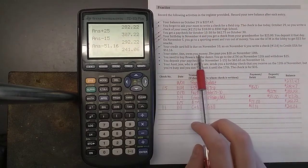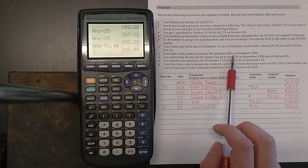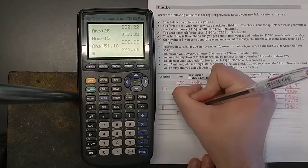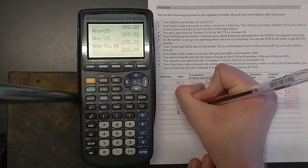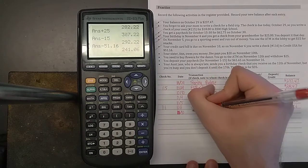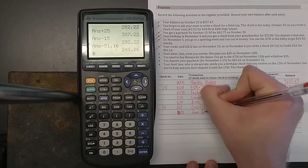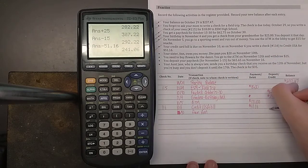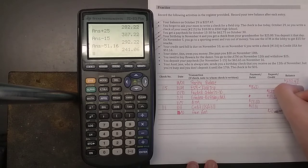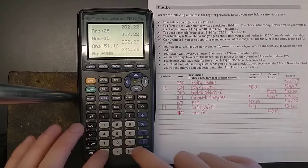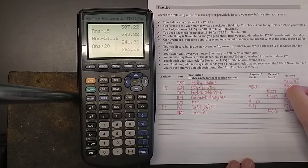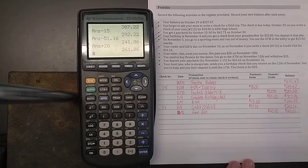Your sister Ann owes you money. She pays you $20 on November 10th. Make sure we have the right date. November 10th. This is from sister Ann. It's a deposit because she's giving you $20. So you can deposit that. So we add that to our previous balance. $261.06.